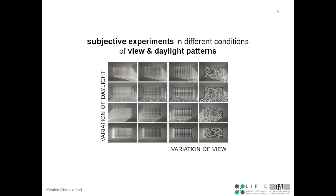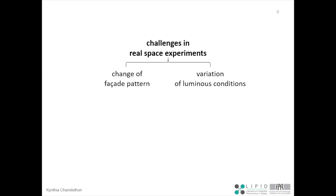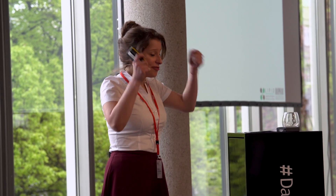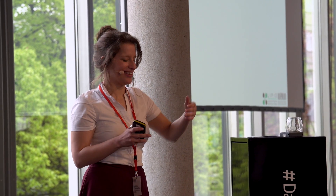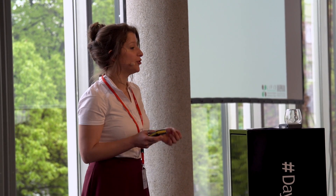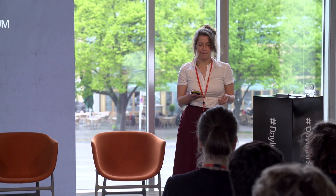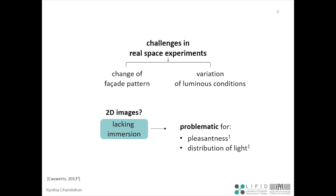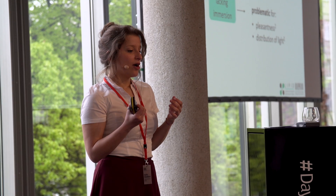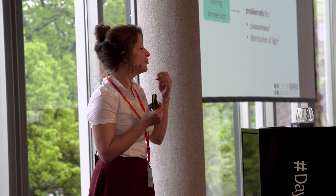To answer this kind of questions, I need to do many experiments with a wide range of conditions changing the view and the daylight pattern. There are many challenges with that. Mainly, if you have a physical building, it's very difficult to change the facade pattern — if you want to change five or ten facades, you need to have the physical change. On the other hand, it's very difficult to control the luminous conditions. We also cannot use simulation or photographs projected on normal screens because these lack immersion, which has been found to be problematic when assessing the pleasantness and distribution of light in a real space.